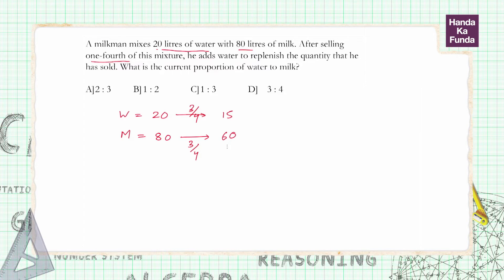He then adds water to replenish the quantity. So how much has he sold? He has effectively sold one-fourth of 100, or he has sold 25 liters. Now this 25 liters he is replenishing. How is he replenishing? He is adding it to the water category, so effectively we have 40 liters of water.